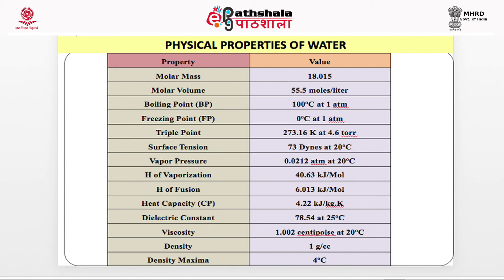Physical properties of water include: molar mass 18.015 g/mol, molar volume 55.5 moles per litre, boiling point 100°C at 1 atmosphere, freezing point 0°C at 1 atmosphere, triple point 273.16 K at 4.6 Torr, surface tension 73 dynes at 20°C, vapor pressure 0.0212 atmosphere at 20°C, heat of vaporization 40.63 kJ/mol, heat of fusion 6.013 kJ/mol, heat capacity 4.22 kJ/kg, dielectric constant 78.54 at 25°C, viscosity 1.002 centipoise at 20°C, density 1 g/cc, and density maxima at 4°C.